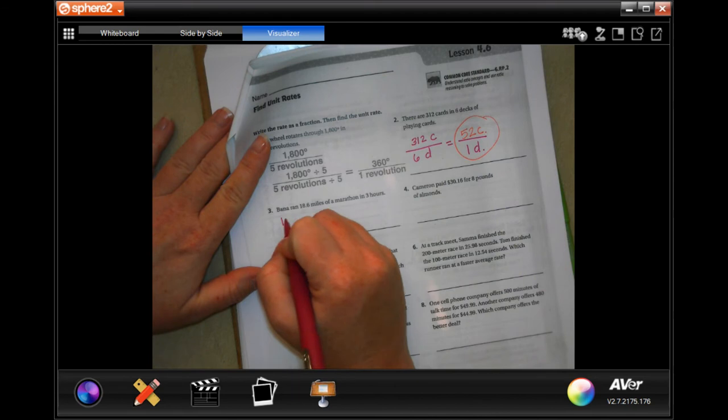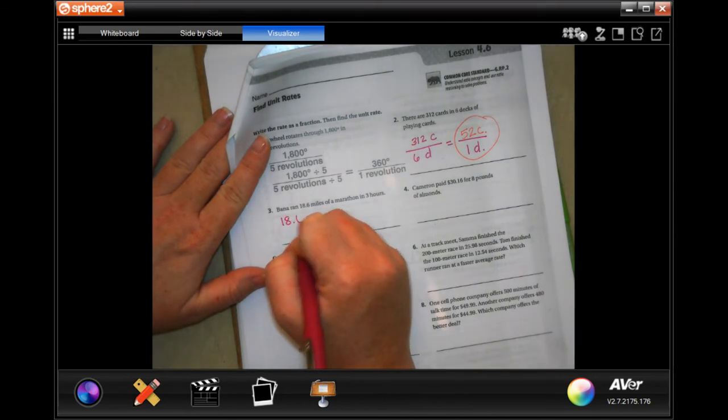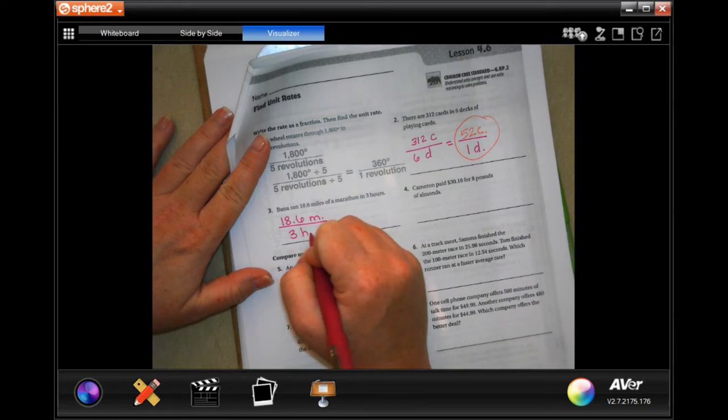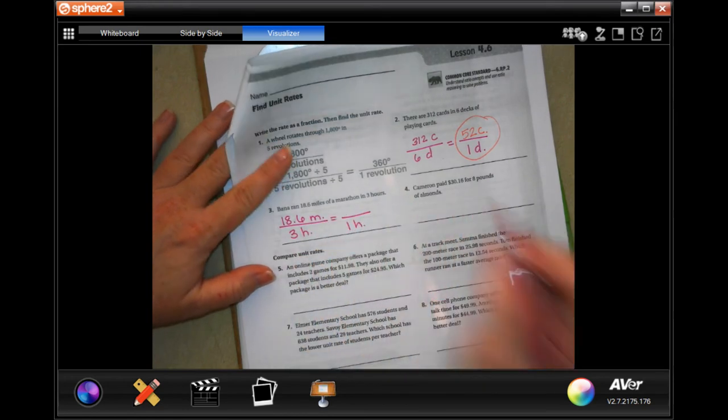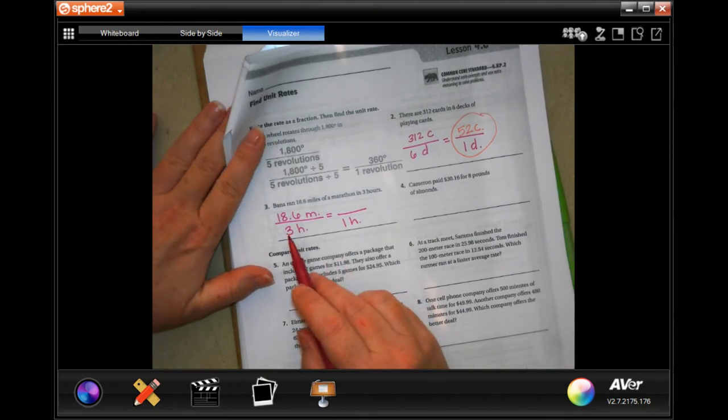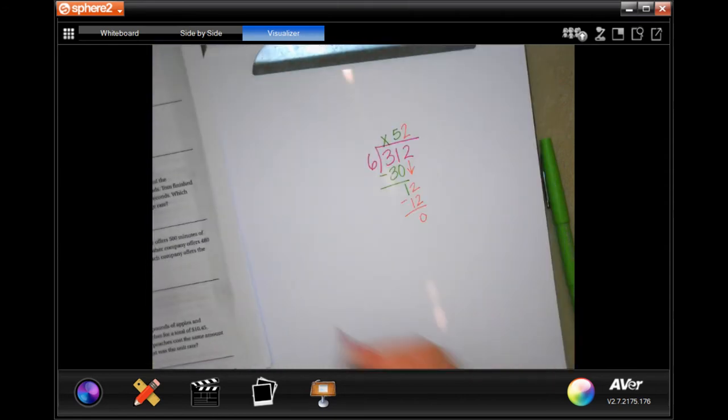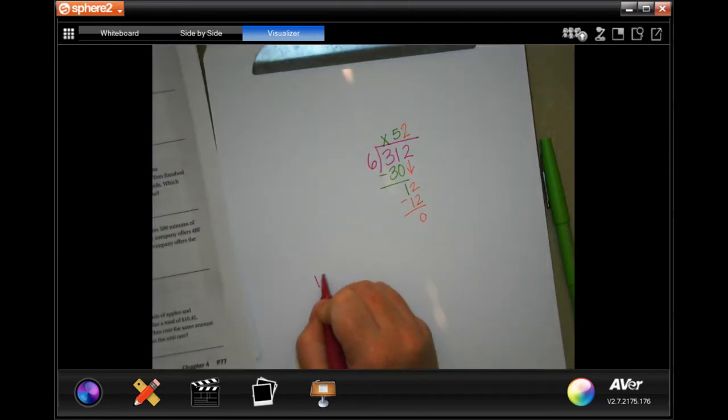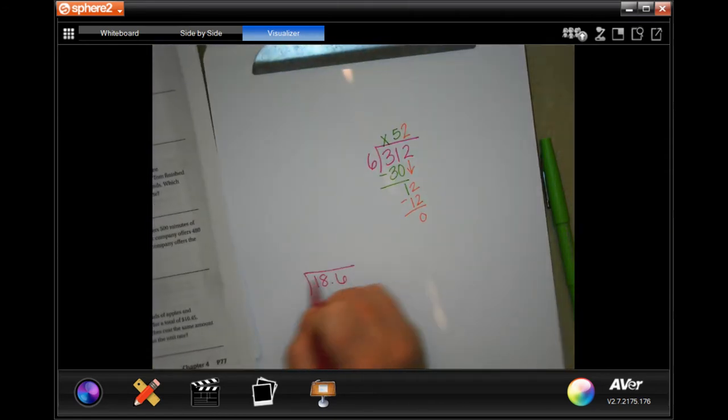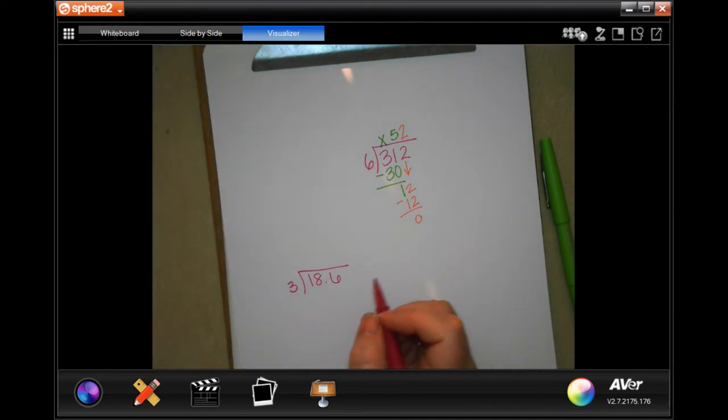Banner ran 18.6 miles in 3 hours. So then in 1 hour. In order to get from 3 to 1, I had to divide by 3. So I'm going to divide by 3 for the top.